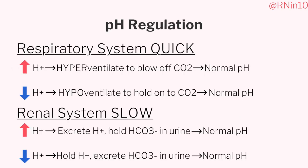The respiratory and renal systems become the main regulators of our pH. If we have too much carbonic acid, we can hyperventilate to blow off the acid in the form of CO2 to normalize pH. If we have too little carbonic acid, we can hypoventilate to retain CO2. If we have too many metabolic acids, the kidneys can excrete the hydrogen ions or hold on to bicarb in urine to normalize pH. If we have too little metabolic acids, we can hold on to hydrogen ions or excrete bicarb in urine to normalize pH.